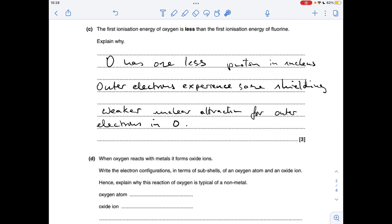Part C, explaining why the first ionisation energy of oxygen is less than that of fluorine. Oxygen's the element before fluorine in the periodic table so it's got one less proton in its nucleus. The outer electrons experience the same amount of shielding because they're in the same period and therefore oxygen's outer electrons experience weaker nuclear attraction.